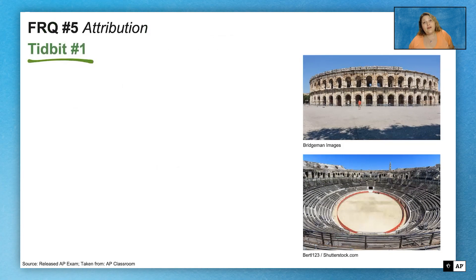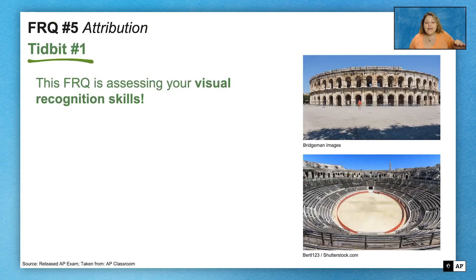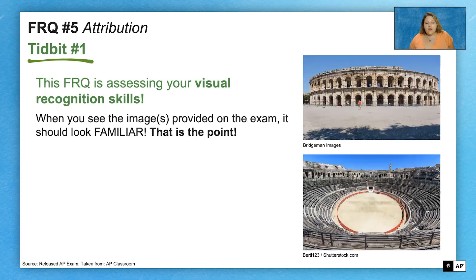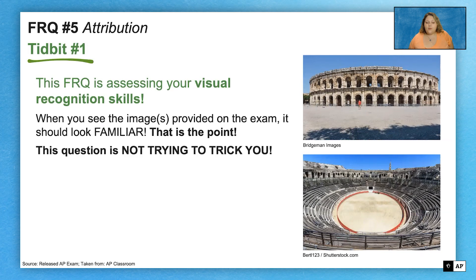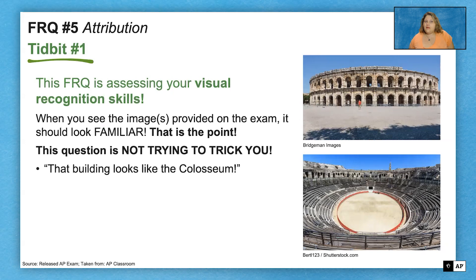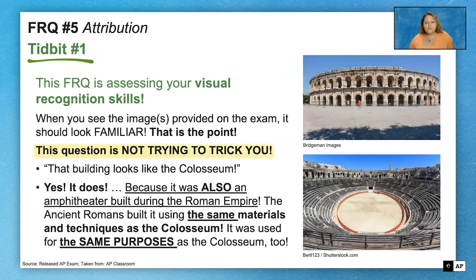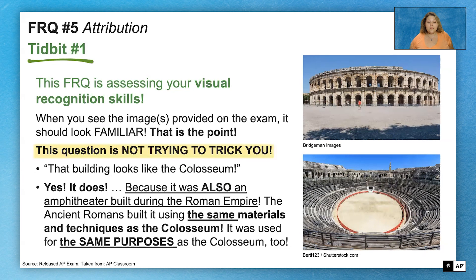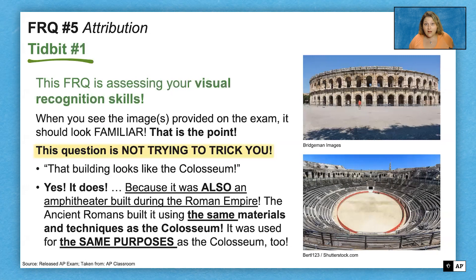For the attribution question, FRQ number five, tidbit number one: this FRQ is assessing your visual recognition skills. You're looking at the picture and connecting it to something you did learn. It's going to look familiar — that's the point, and this question is not trying to trick you. If you're thinking this building looks a lot like the Colosseum, you're right, because this building was also an amphitheater built during the Roman Empire. They used the same materials and techniques to build this amphitheater as the Flavian amphitheater, the Colosseum in Rome, and it was used for the same purposes.